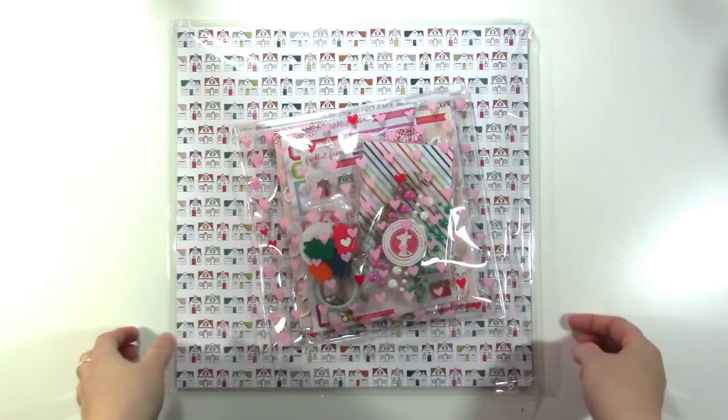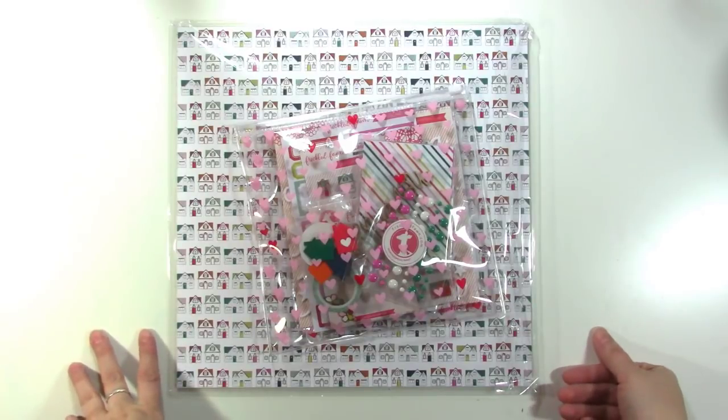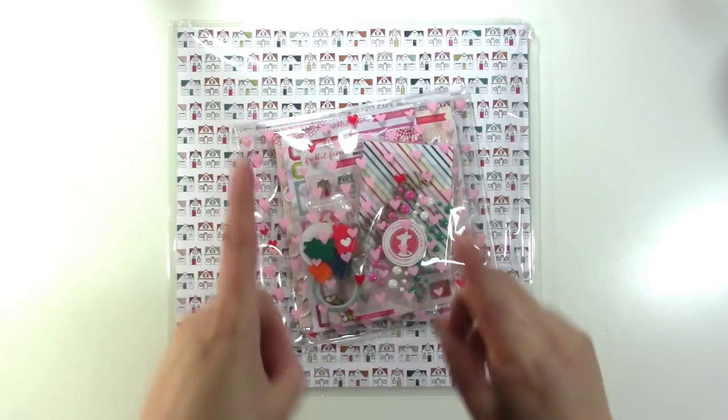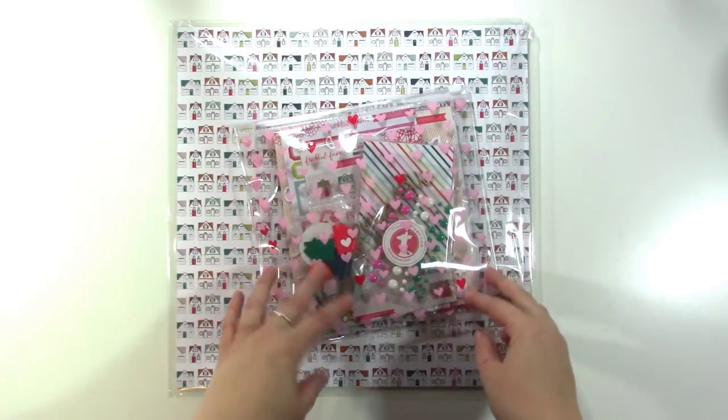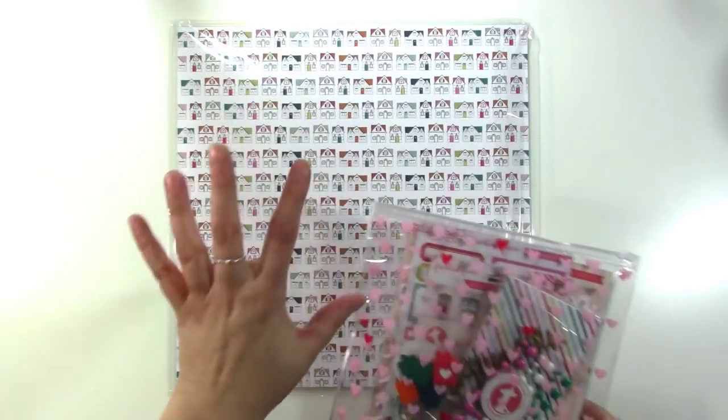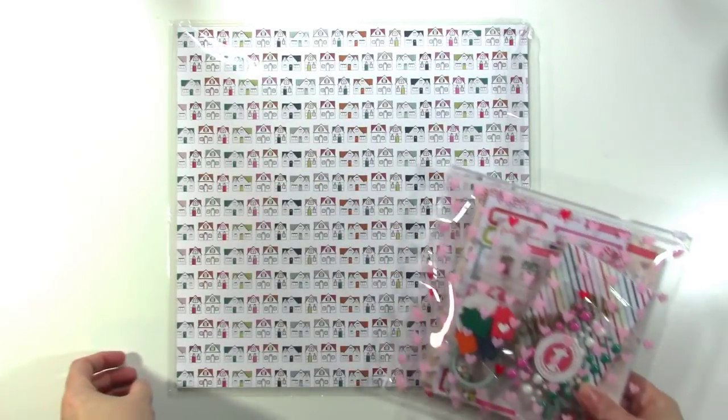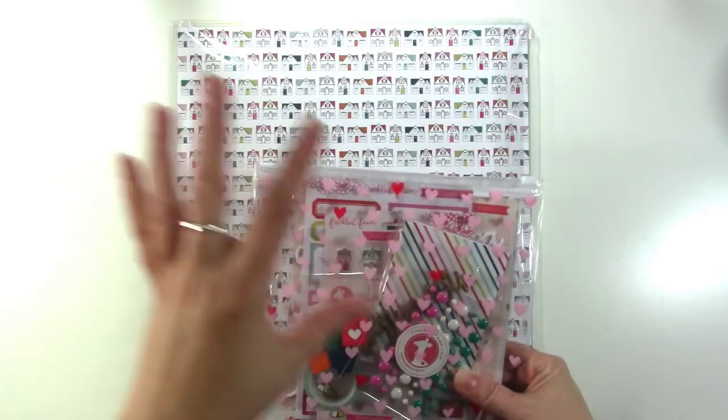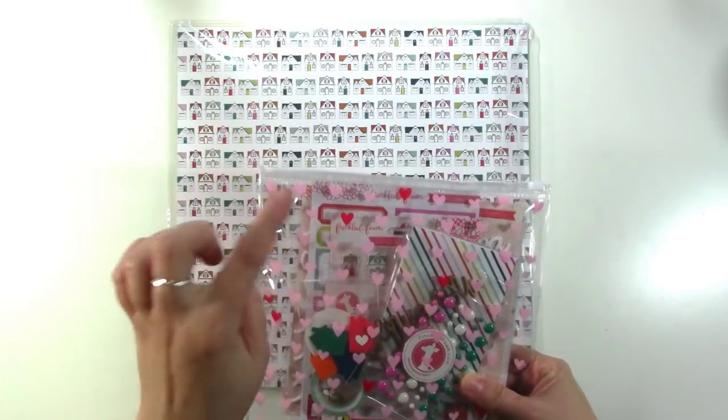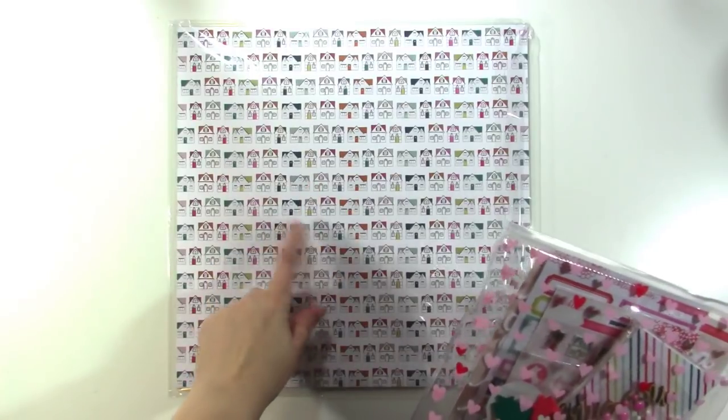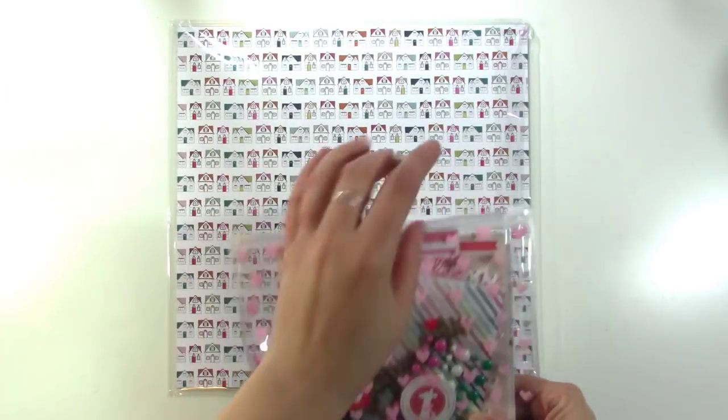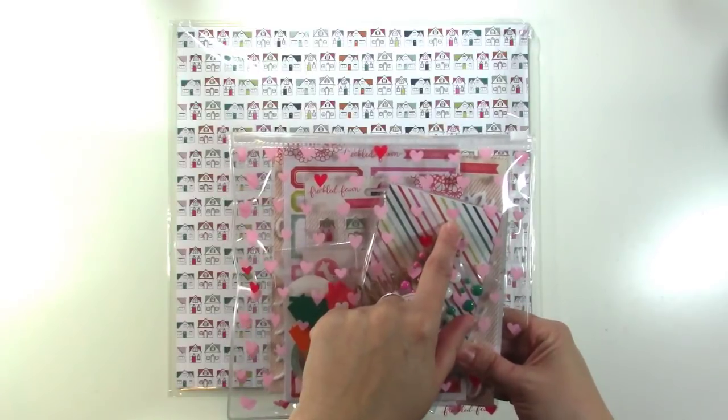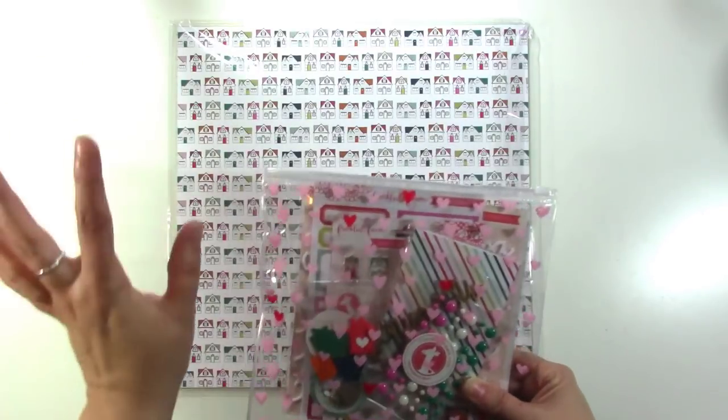I know I've had a lot of haul videos on my channel lately, that kind of seems like all that I've been doing, but I promise there are process videos coming, so stay with me. But, Freckled Fawn now does subscriptions that include just the embellishment kit, a subscription that includes the embellishment kit plus patterned paper, which is now 12x12, or an embellishment kit that includes 3x4 journaling cards, which is awesome.